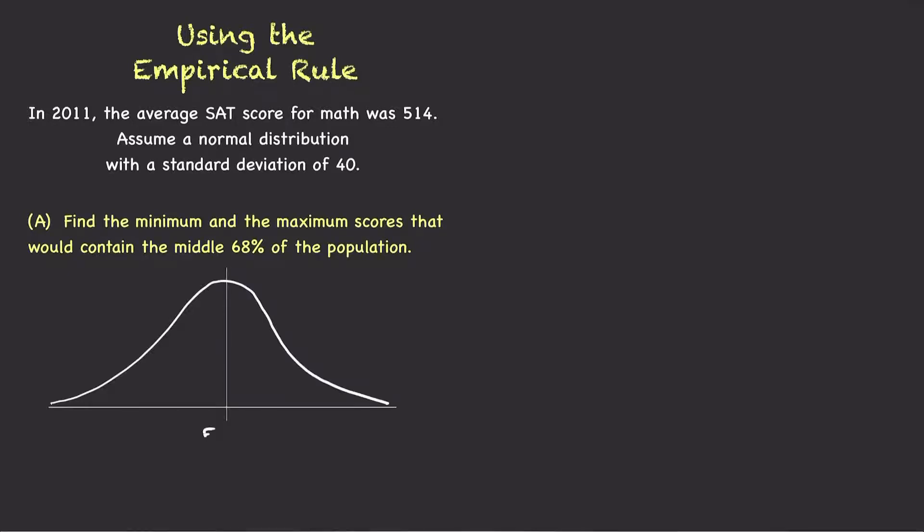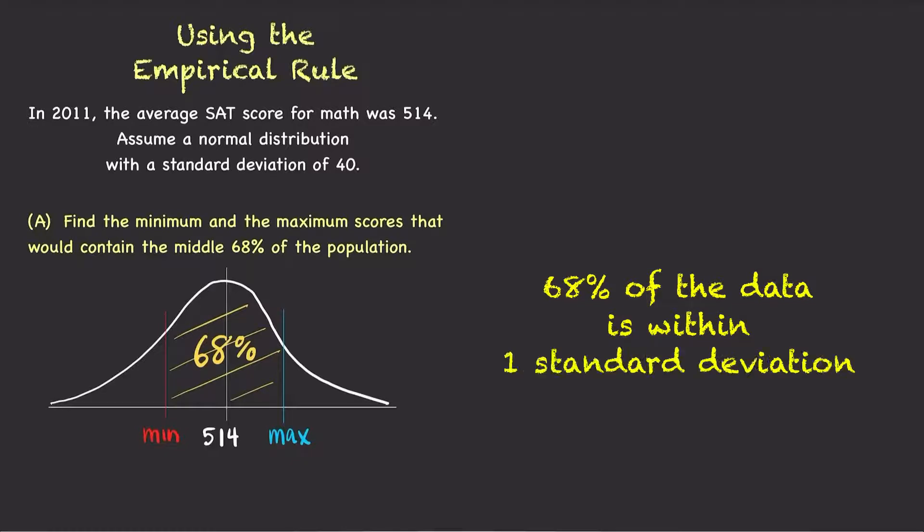Given a normal distribution, the empirical rule says that 68% of a population falls within one standard deviation of the mean.